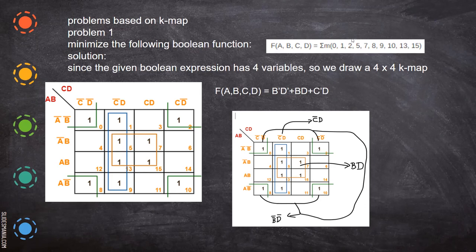We write the positions 0 through 15 on the map. Now we have written the ones. Because with ones only, we are going to form pass quads. So we try to form as many groups as possible. Here we form a quad, here we form another quad, and then all the corners form one quad.